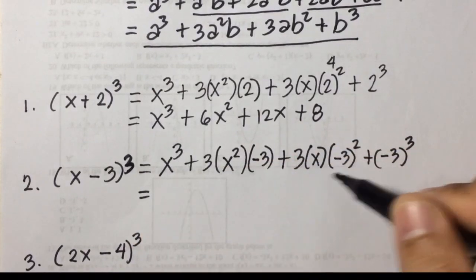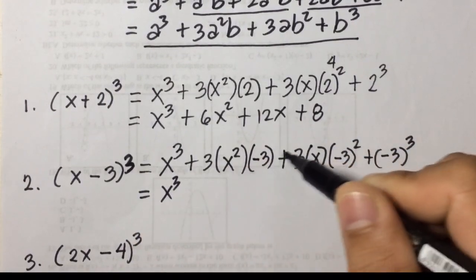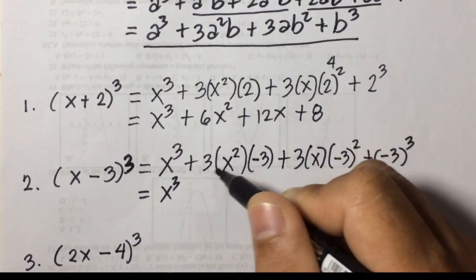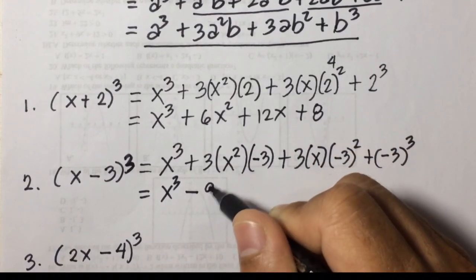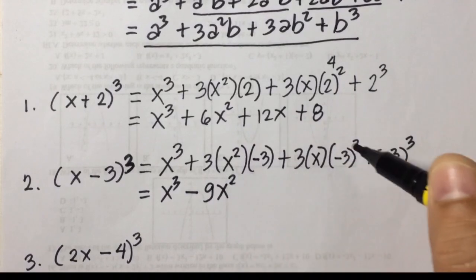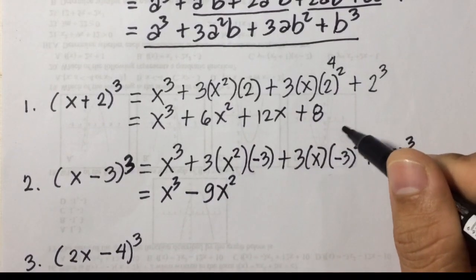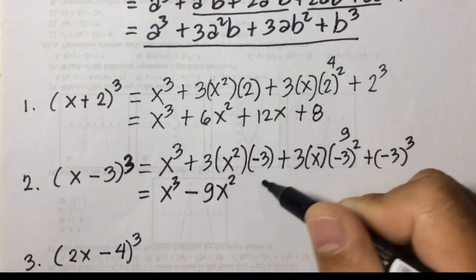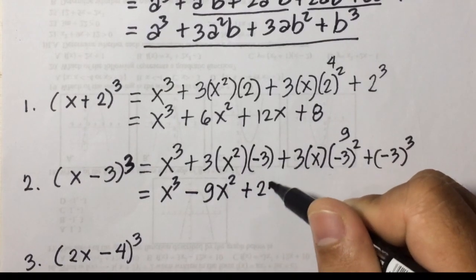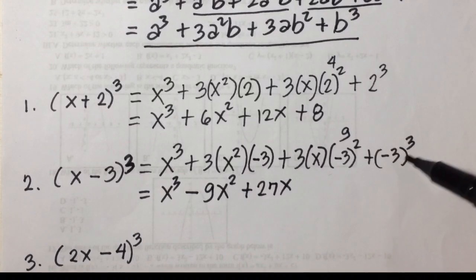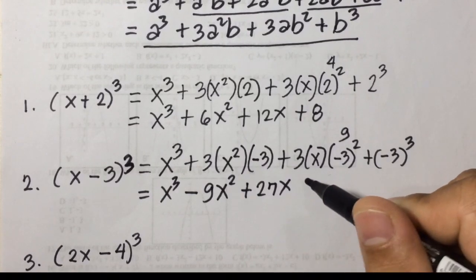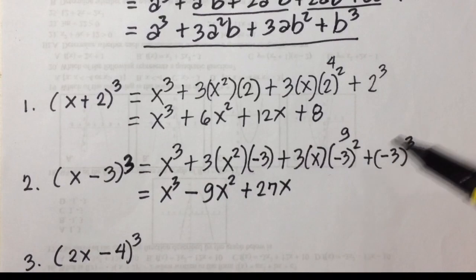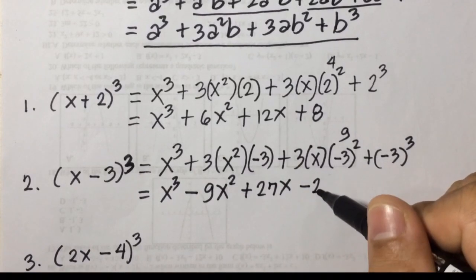Operating: we have x cubed, then negative 3 times 3 is negative 9, so negative 9x squared. Then negative 3 squared is 9, and 9 times 3 is 27, so positive 27x. Then negative 3 cubed: negative 3 times negative 3 is 9, times negative 3 is negative 27. So the answer is x cubed minus 9x squared plus 27x minus 27.